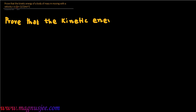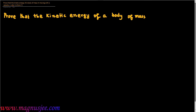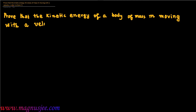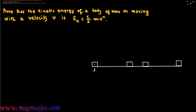Prove that the kinetic energy of a body of mass M moving with a velocity v is Ek equal to half mv square, that is 1 by 2 mv square.